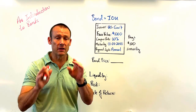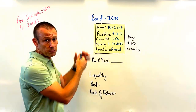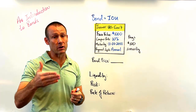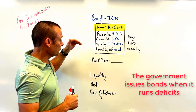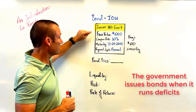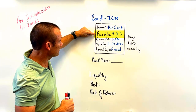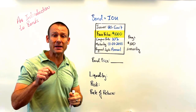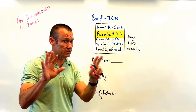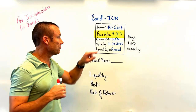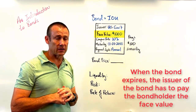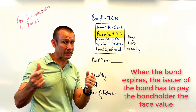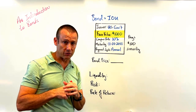Let's head over to this bond right here. The issuer is the US government — they have to borrow money because they're running deficits, so they're going to print out a bond. This bond has a face value of $1,000. The face value is printed on the bond — it is contractual. When this bond matures or expires, the issuer has to pay you that $1,000. That's usually how much you originally paid or lent when the bond was first purchased.